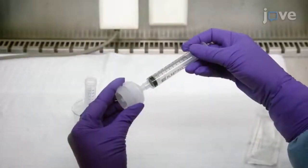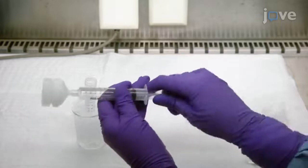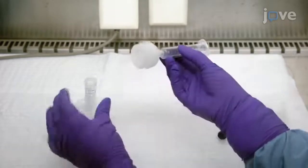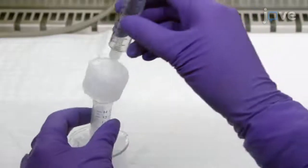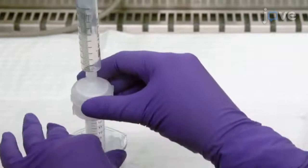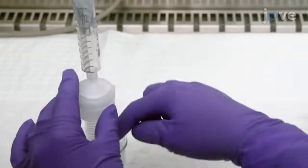To remove any remaining oocysts and shells, place a 10-milliliter syringe barrel equipped with a 47-milliliter filter holder apparatus fitted with a 3-micrometer pore-sized polycarbonate filter into a 15-milliliter tube at 4 degrees Celsius.